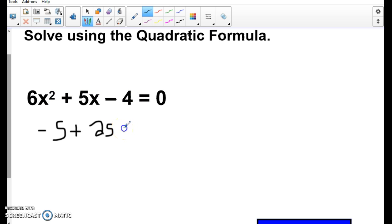So negative 24 times 4 is a positive 96. Remember this was square root, I should put that in right here. Okay, all over 2 times a. 2 times a, so 2 times 6, which is 12.